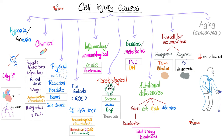How about chemical factors? We have the polycyclic hydrocarbons, such as cigarette smoking. Do not just say hydrocarbons, because literally you are made of hydrocarbons - we say polycyclic hydrocarbons. Alcohols can lead to cell injury. Medications, especially acetaminophen or paracetamol - Tylenol.